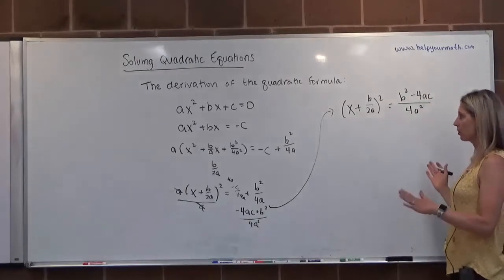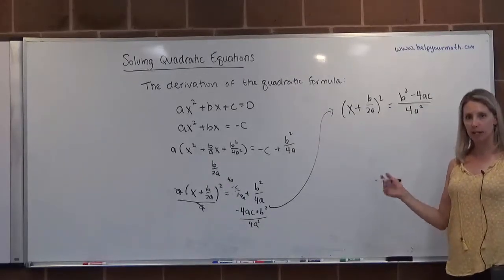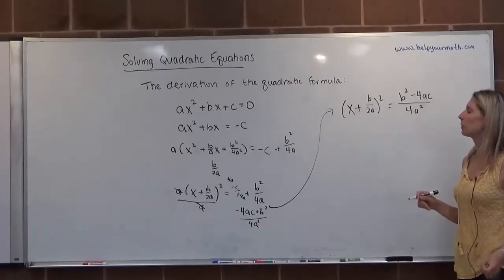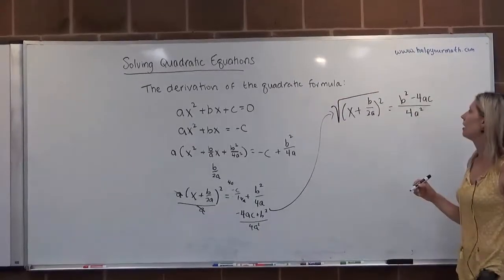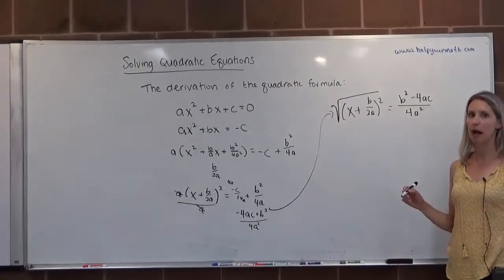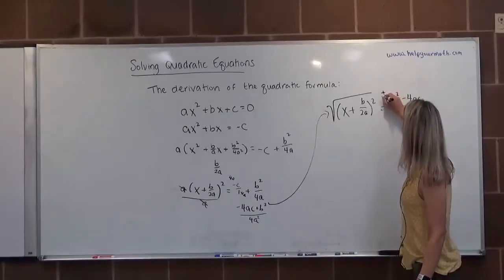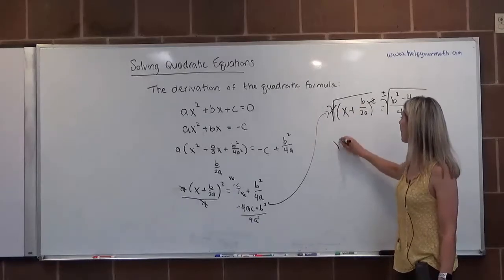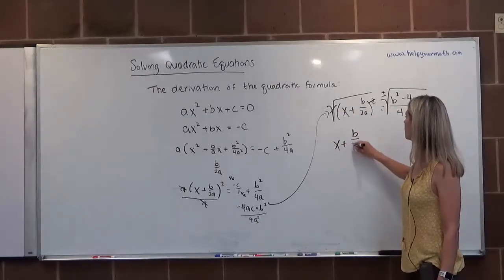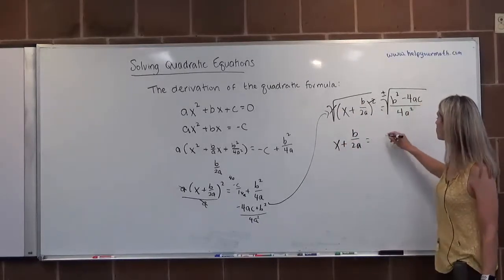So this is what I have so far. What I need to do to get x by itself is take the square root of both sides. Remember, when I take the square root of the non-variable side, I do need to include my positive or negative. The square and the square root cancel. So I have x plus b over 2a is equal to,